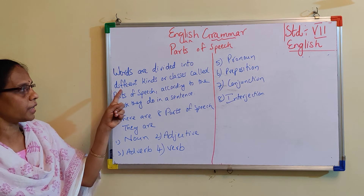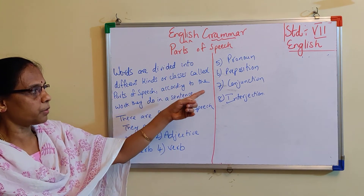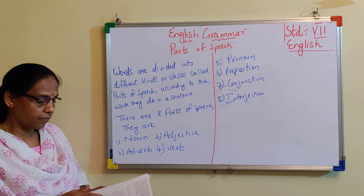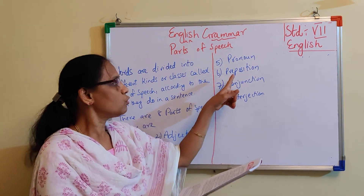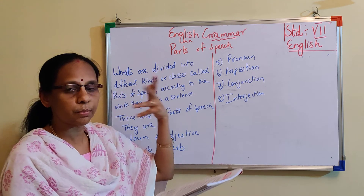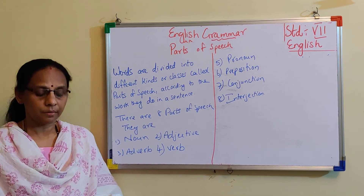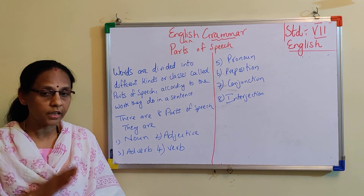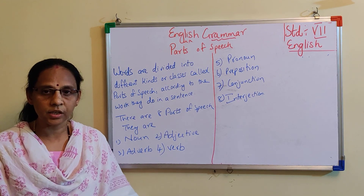So, parts of speech: words are divided into different kinds of classes according to the work they do in a sentence. Eight parts of speech — noun, adjective, adverb, verb, pronoun, preposition, conjunction, interjection. I hope you might have understood this lecture. After another explanation I will move to the next lesson. Read the lesson and make sure all the definitions are learned. We will resume in the next lecture. Till then, take care. Thank you.